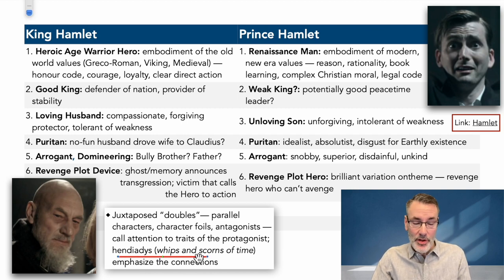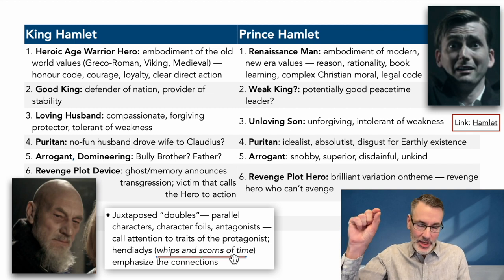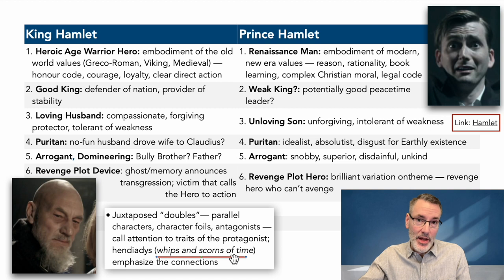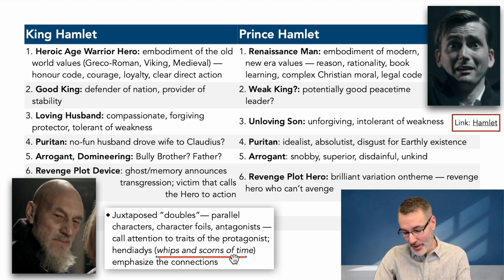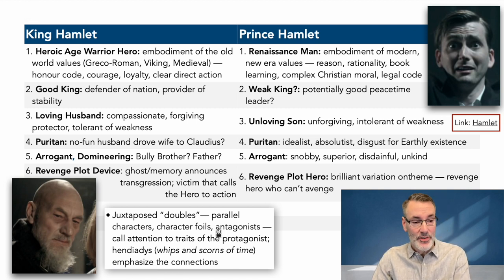A good writer emphasizes connections with other characters to draw out characteristics he wants you to focus on — juxtaposed doubles, parallel characters, character foils and antagonists. Harry Potter, Ron Weasley, and Hermione Granger are all parallel characters that draw attention to different traits of Harry Potter, and the same thing applies in all of Shakespeare's plays. Shakespeare uses a literary device called hendiadys — a repetition of parallel elements connected by a simple word like 'and': whips and scorns of time, A and B, C and D. Go back and read your text and you'll see these all throughout the play.